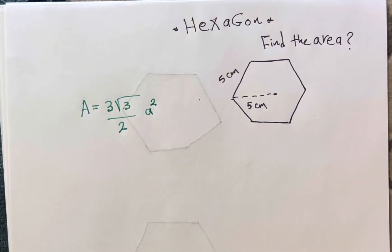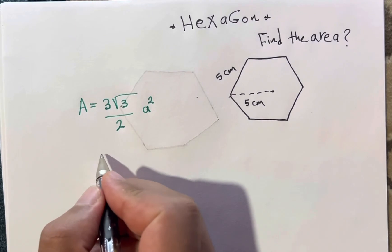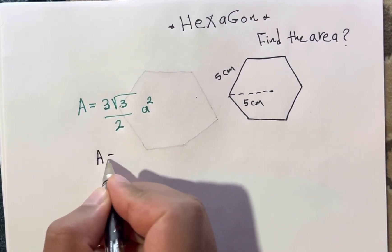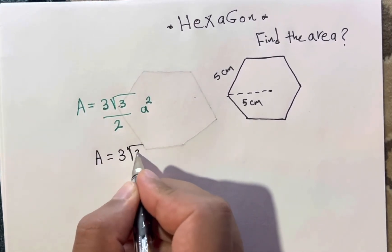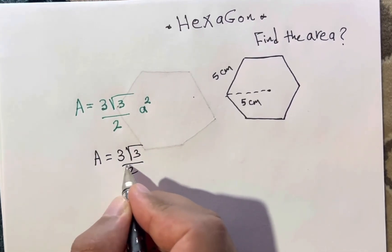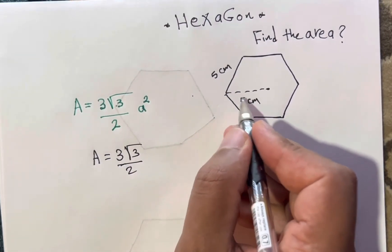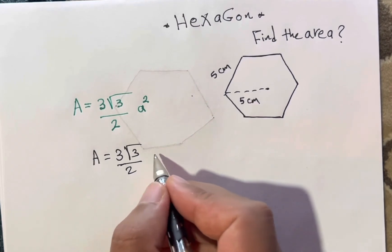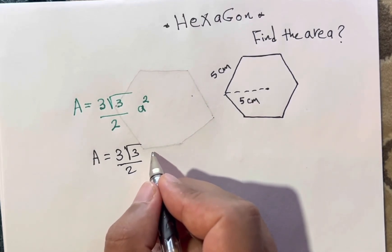After that, you are going to substitute. A equals three square root of three over two, and this a squared will be 25.